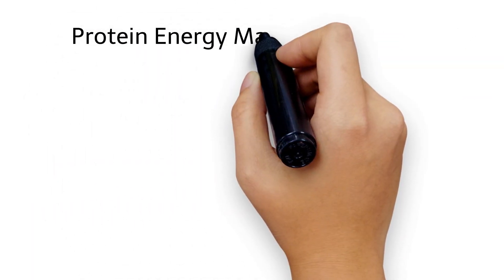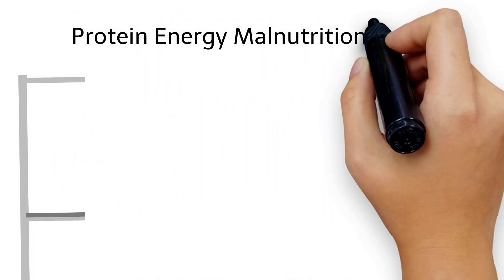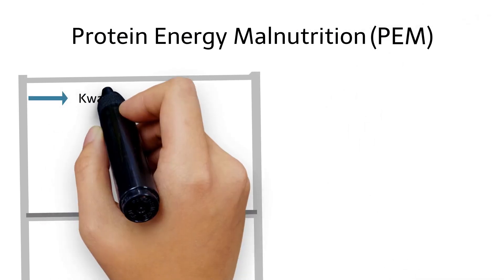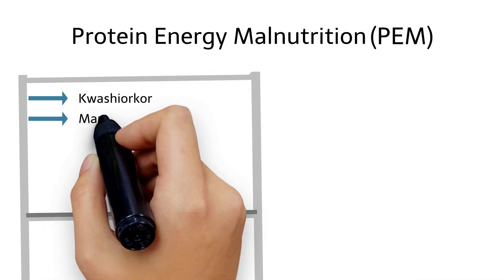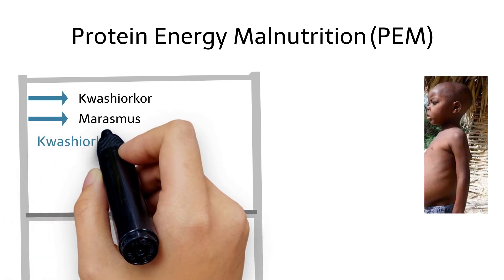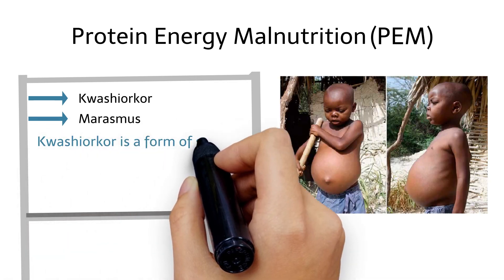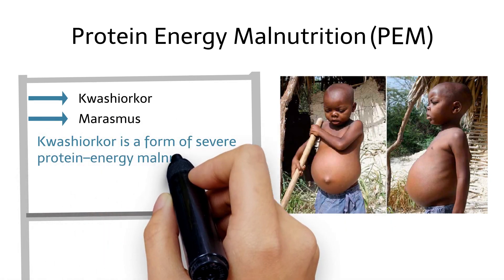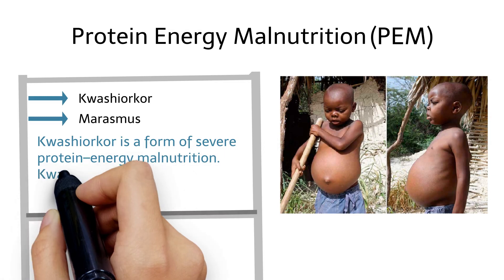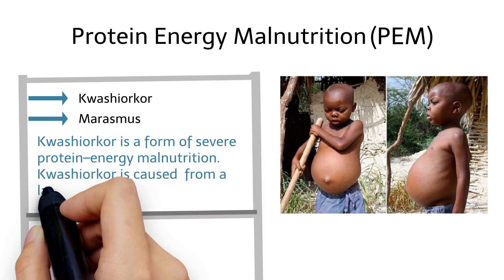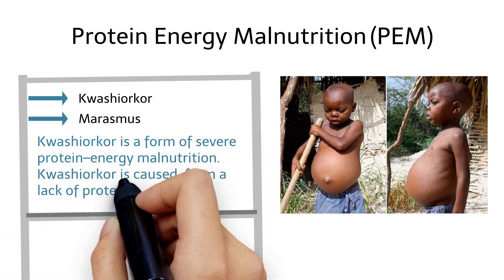Protein energy malnutrition includes Kwashiorkor and Marasmus. Kwashiorkor is a form of severe protein energy malnutrition, caused by a lack of protein.